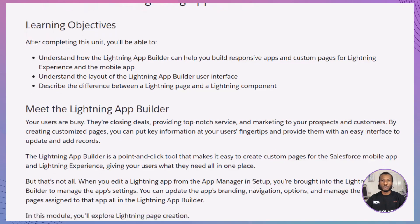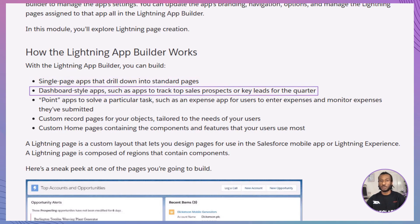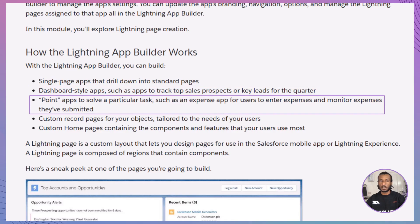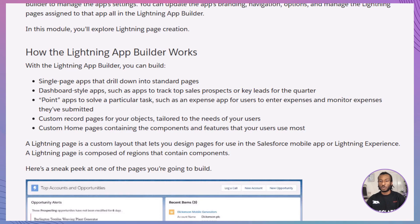Now let's explore how the Lightning App Builder works. With this tool, you can build a variety of apps tailored to your organization's needs — whether it's single-page apps for deep dives into standard pages, dashboard-style apps to keep top sales prospects or quarterly leads in focus, point apps designed for specific tasks like managing expenses, custom record pages tailored to your objects and user workflows, or custom homepages packed with the essential tools and components your users depend on daily. At its core, a Lightning page is a custom layout composed of regions that hold various components. These pages are responsive, meaning they adapt seamlessly whether accessed from a desktop or a mobile device.